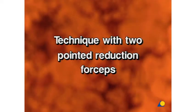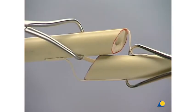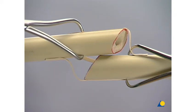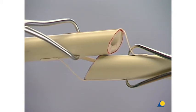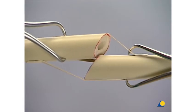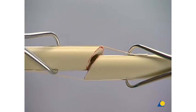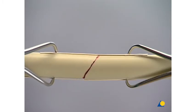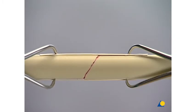Technique with two-pointed reduction forceps. The main fragments are each held with one reduction forceps. Use of two reduction forceps allows reduction in all six degrees of freedom of the fragment dislocation: extension-contraction, addlateral displacement in two perpendicular planes, axial angulation in two planes, and rotation around the longitudinal shaft axis. Thanks to the pointed reduction forceps, the devascularization of the cortex is only punctiform and therefore insignificant.